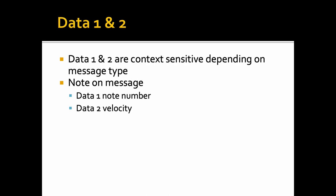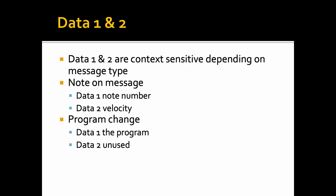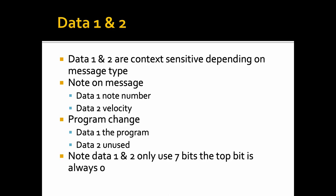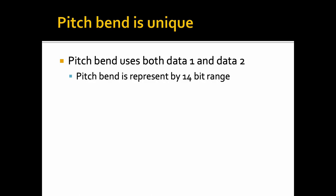Apart from the status byte, data 1 and data 2 are context sensitive depending on the message type. With a note on message, data 1 is the note number and data 2 is the velocity. With program change, data 1 is the program number but data 2 is not used. Data 1 and data 2 only use seven bits — the top bit is always zero — which is why MIDI data only ranges from 0 to 127. Pitch bend is unique because it uses both data 1 and data 2 since the pitch bend is represented by a 14-bit number, giving 16,384 values.